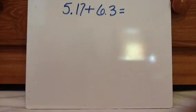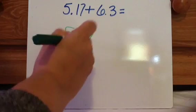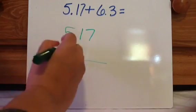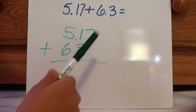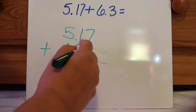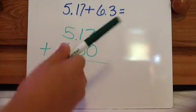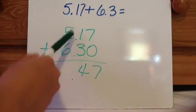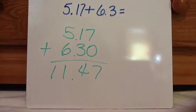Let's look at one more. 5.17. Go ahead and put the decimals where they belong. 6.3. So in this situation, this one doesn't have any hundredths. So you just put a zero. So 7 plus 0 is 7. 1 plus 3 is 4. 6 plus 5 is 11. So 11 and 47 hundredths.